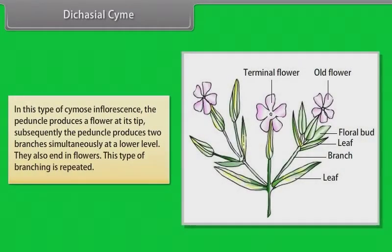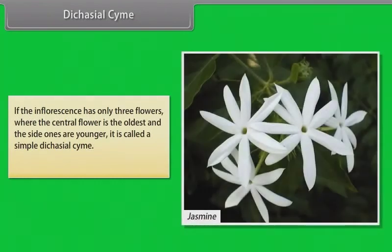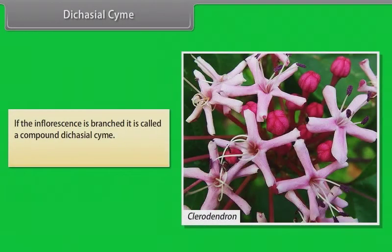In dichasial cyme, the peduncle produces a flower at its tip; subsequently the peduncle produces two branches simultaneously at a lower level, which also end in flowers, and this branching is repeated. If the inflorescence has only three flowers where the central flower is the oldest and the side ones are younger, it is called a simple dichasial cyme — example: Jasmine. If the inflorescence is branched, it is called a compound dichasial cyme — example: Clerodendron, Rysia.